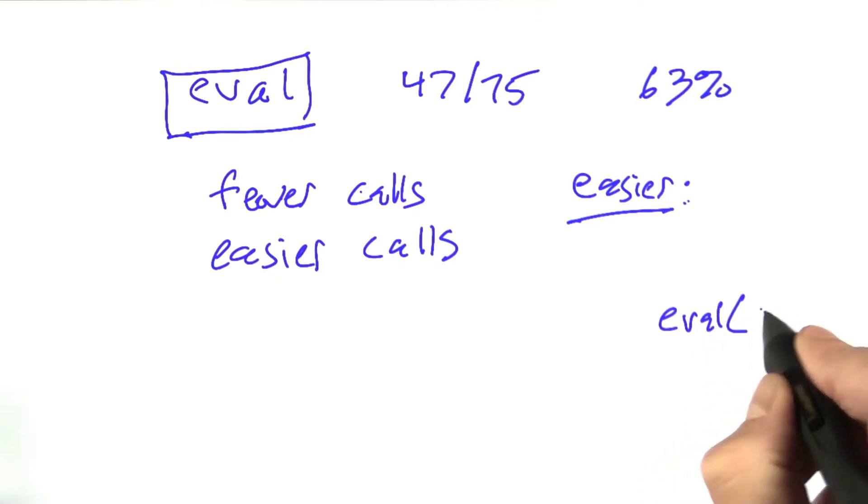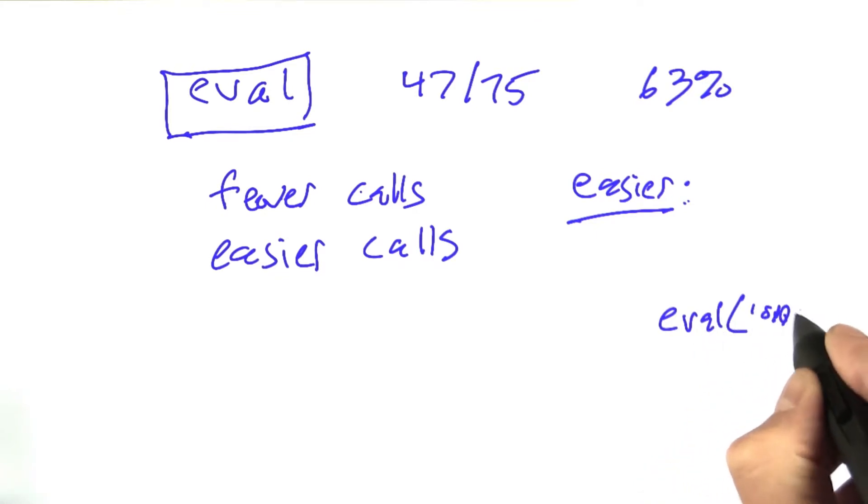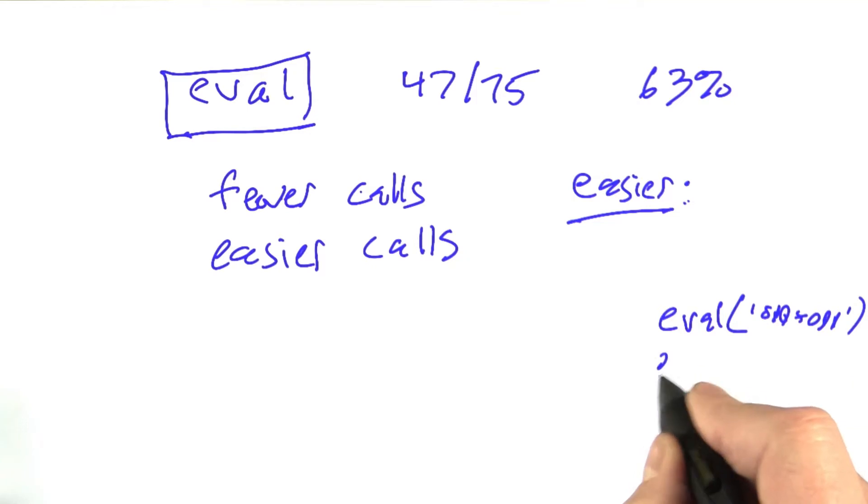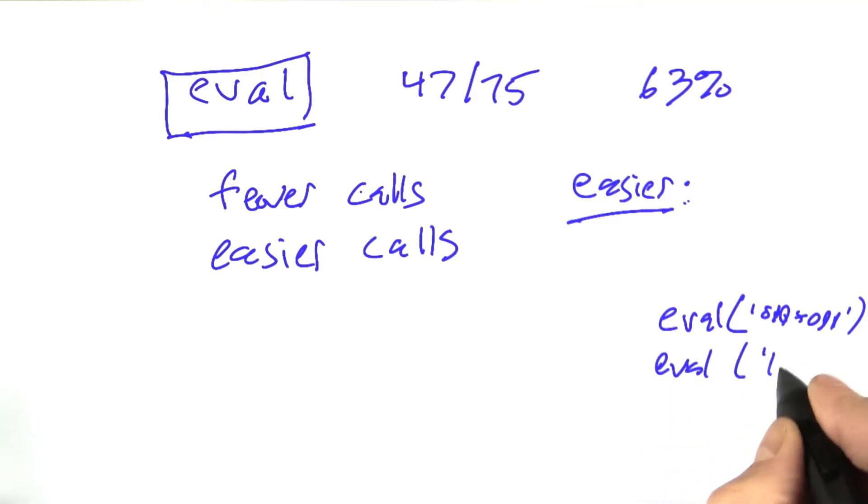We could do eval of odd plus odd, and then do eval of even, and do those separately rather than do them all together in one equation. Of course, I'd probably substitute in the numbers here rather than eval the letters themselves. That might be one way of breaking it up into smaller pieces.